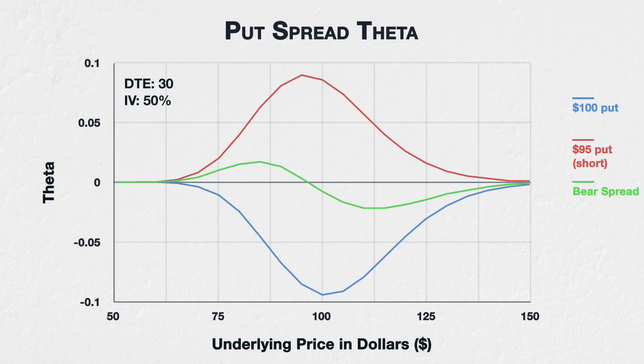This chart shows the theta of a 100/95 bear put spread in green, and of the two individual options that combine to create this spread. The 100 put option in blue is purchased and therefore gives us a negative theta, meaning it loses value as time passes. However, the 95 put option in red is sold and therefore gives us positive theta, meaning we gain from this option's loss in value as time passes. The put spread line is simply the sum of the theta for the short 95 put and long 100 put.